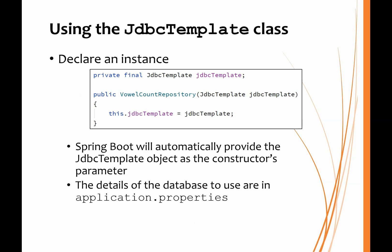To use the class, all we have to do is declare an instance. Here we've got our private final JDBC Template object reference called jdbcTemplate, and in the constructor method for the repository class, we take that as a parameter and store it in the field. Spring Boot will automatically provide the JDBC Template object as the parameter to the constructor, and as previously, details of the database to use are in the application.properties file.